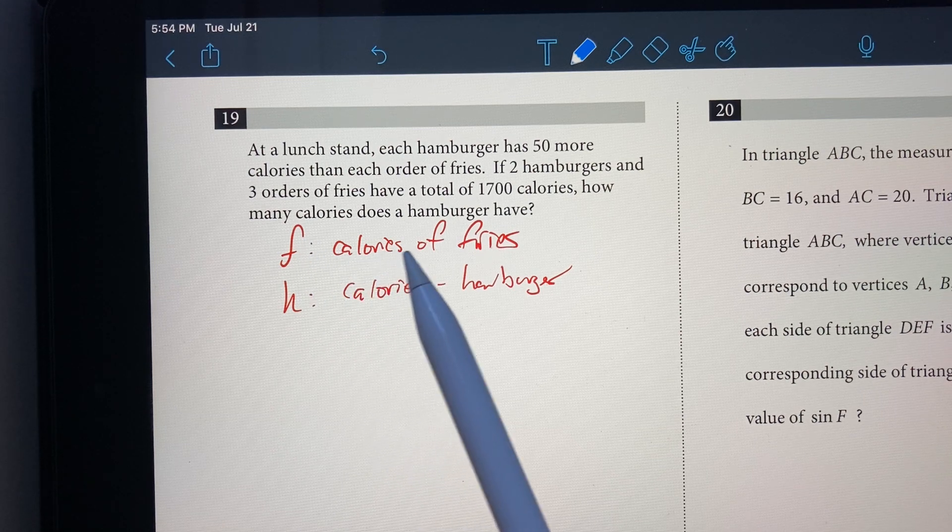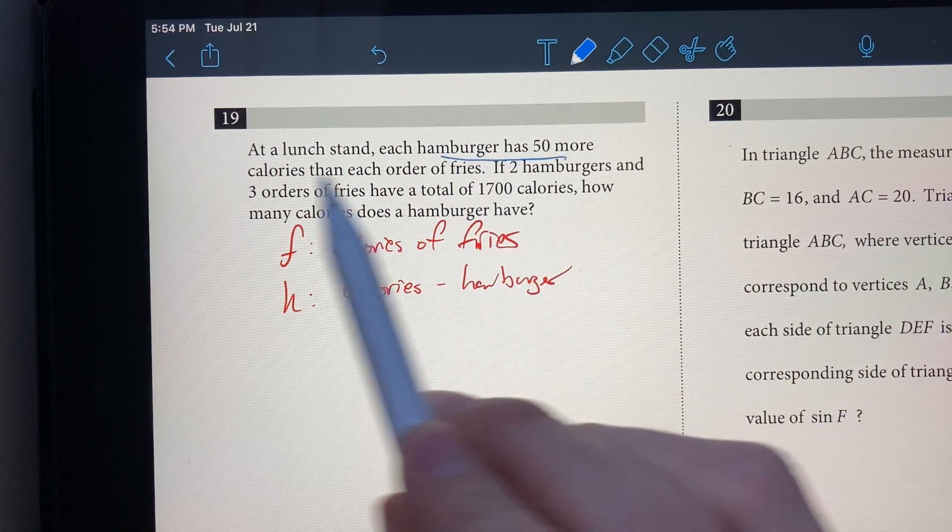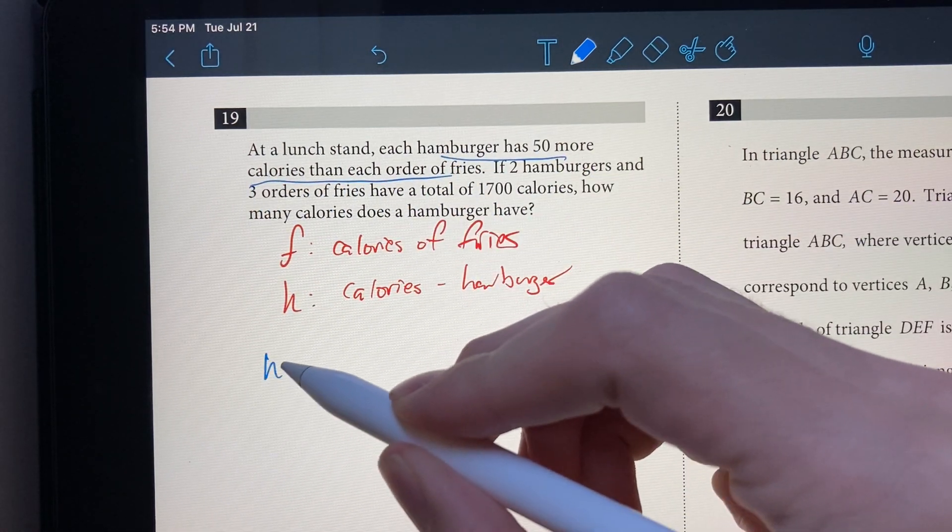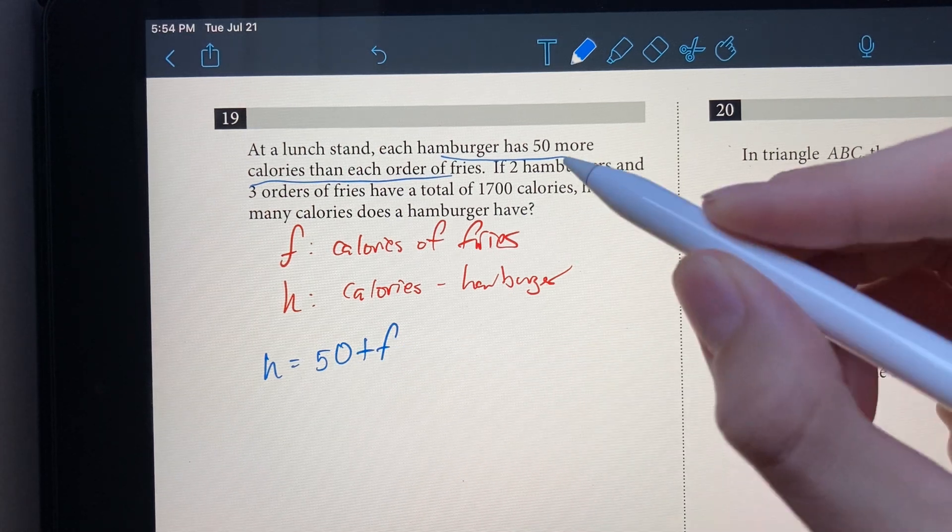I'm going to use F for the calories of an order of fries and H for the calories of a hamburger. We're given that a hamburger has 50 more calories than each order of fries.